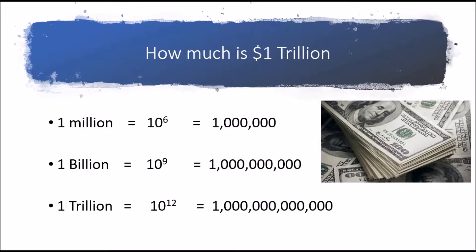Basically, 1 million is equal to 10 to the power 6, so there will be 6 zeros after 1. Similarly, 1 billion is equal to 10 to the power 9, which means there will be 9 zeros after 1. Likewise, 1 trillion is equal to 10 to the power 12.